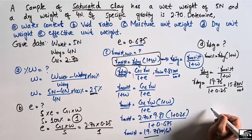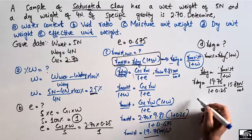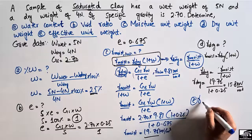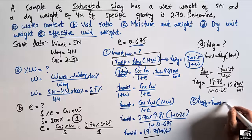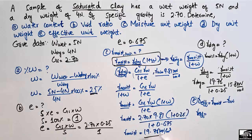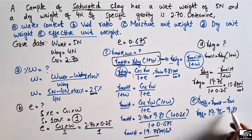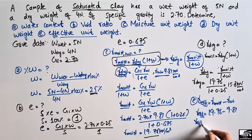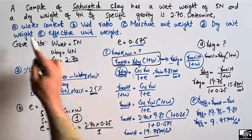Finally, to find the effective unit weight (also called submerged unit weight), we use: gamma effective = gamma saturated − gamma_W. Since the soil is fully saturated, gamma saturated = gamma moisture = 19.76 kN/m³. Subtracting gamma_W = 9.81 kN/m³ gives gamma effective = 9.95 kN/m³.